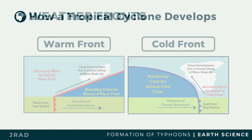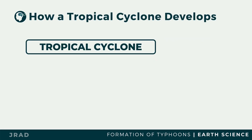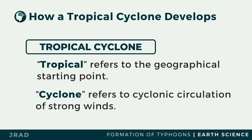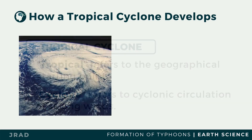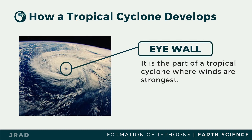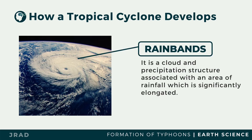The word tropical cyclone is composed of two distinct words that completely describe its characteristic. Tropical refers to the geographical starting point which is usually hot and humid, whereas cyclone refers to the cyclonic circulation of strong winds — counterclockwise in the northern hemisphere and clockwise in the southern hemisphere. The eye of the typhoon is the calm area in the center of a tropical cyclone, bordered by spinning winds. The part where winds are strongest is the eye wall. The rain bands are clouds and precipitation structures associated with an area of significantly elongated rainfall.